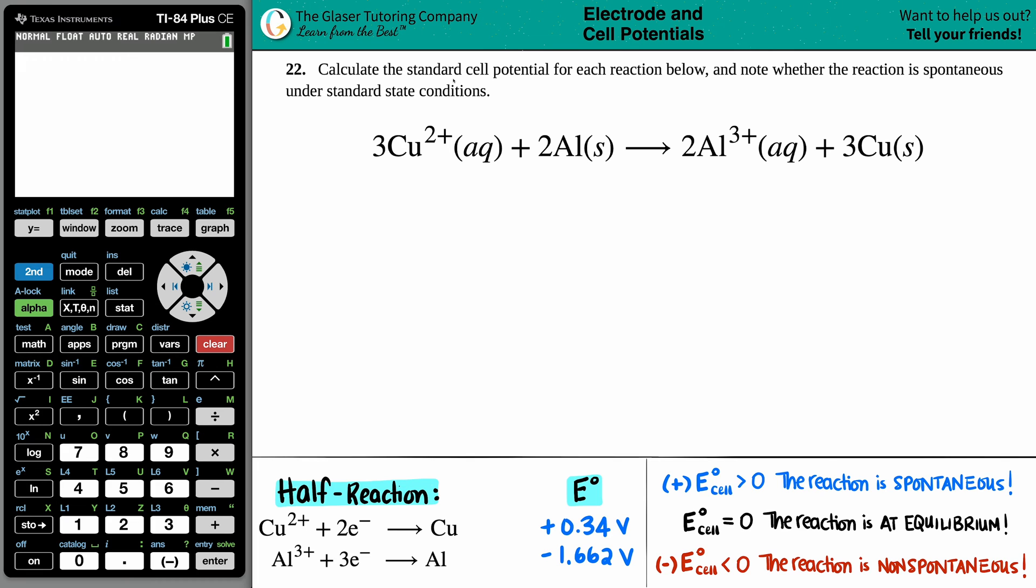Number 22. Calculate the standard cell potential for each reaction below and note whether the reaction is spontaneous under standard state conditions. Then we have the equation 3Cu2+ plus 2Al solid yields 2Al3+ plus 3Cu solid.